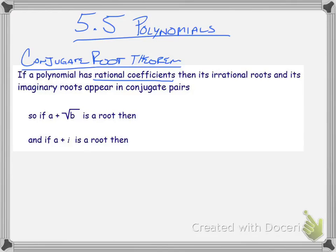Then its irrational roots. Now, irrational roots is talking about any radical that doesn't simplify. So, square root of 3, square root of 2, square root of 5. Those are irrational numbers. So, if a polynomial has any irrational roots and its imaginary roots, which means the roots with i's,